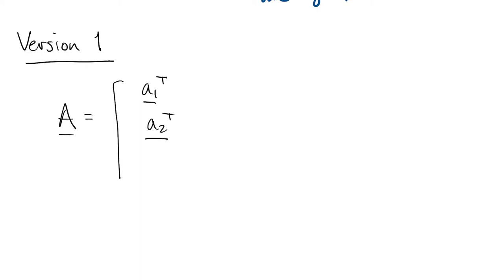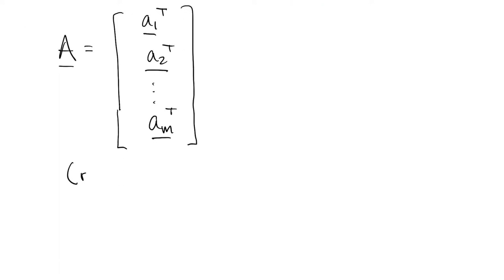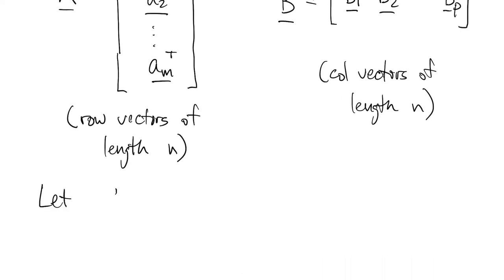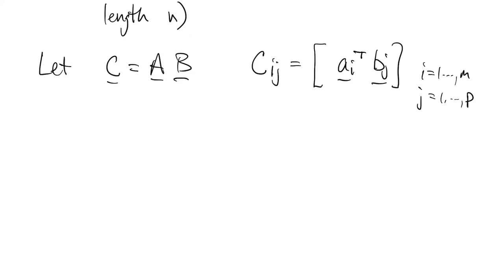We'll give two versions that are equivalent. We'll write the A matrix in terms of its rows. Since our vectors are always column vectors, we have to transpose them so they have the correct shape. So A has m rows, and each row has n columns. These are row vectors, each one with length n. The B matrix we'll write in terms of its columns. So it has p columns, and each column has length n. Now we're ready to define the product of A times B. Let's call it C. Then the ij element of C is the inner product between row i of A and column j of B. So we can think of it as an m by p matrix of inner products.